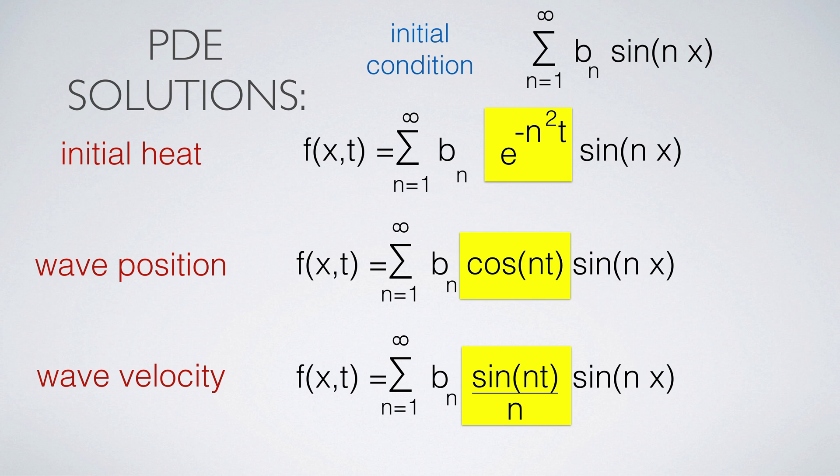In the heat case, we reduce to f prime equals lambda f, which has the solution e to the lambda t, which in the d-square case is e to the minus n-squared t.